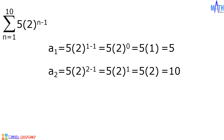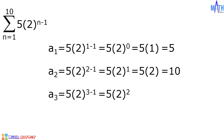If n is equal to 3, the third term, or a sub 3, is equal to 5 times 2 raised to 3 minus 1. 3 minus 1 is equal to 2, and we have 5 times 2 squared. 2 squared is equal to 4, so 5 times 4 is equal to 20. The first three terms are 5, 10, and 20.